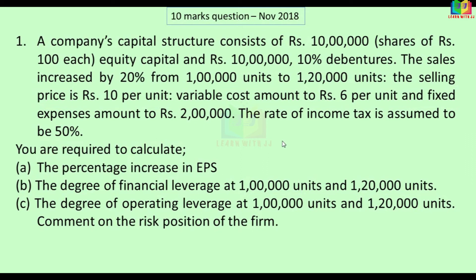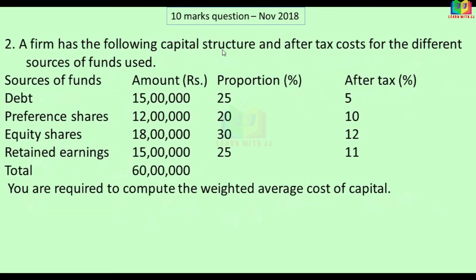Next problem: a firm has the following capital structure and after-tax cost for different sources of funds — debt, preference shares, equity shares, and retained earnings — with given amounts and proportions. We calculate the weighted average cost of capital (WACC) by multiplying each source's proportion by its after-tax cost and summing the products. This is a straightforward 10-mark problem.